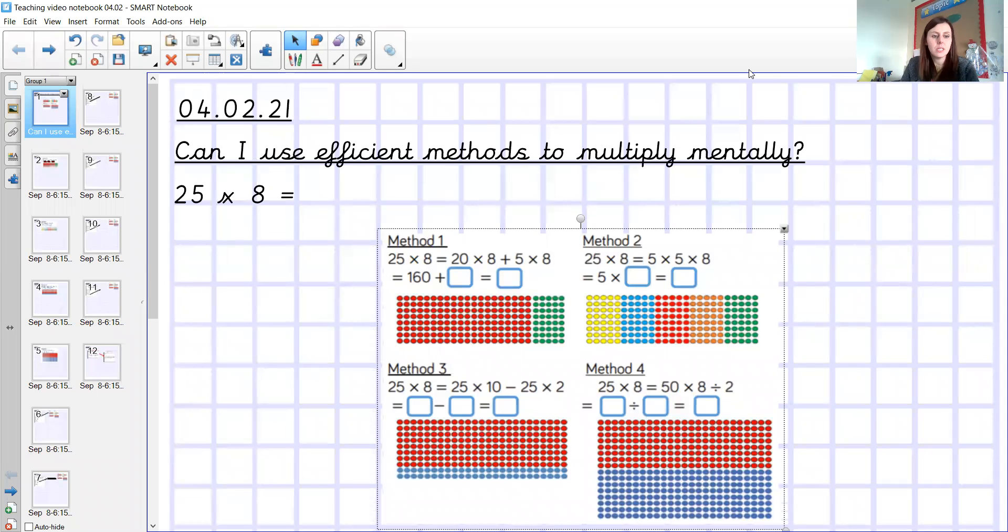Hi Year 5, today I'm here to talk to you about can I use efficient methods to multiply mentally. And the reason you need to know this is so that you can pick the best and the quickest strategy when you are trying to do something mentally in your head. So we're going to have a look today at four different methods and see if we can find out what the most efficient method is to select when you are faced with a multiplication.